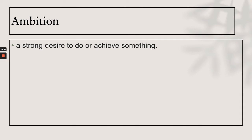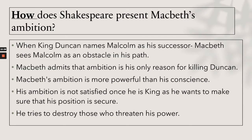Ambition means a strong desire to do or achieve something. Shakespeare presents Macbeth's ambition in several ways: when King Duncan names Malcolm as his successor, Macbeth sees Malcolm as an obstacle. Macbeth admits ambition is his only reason for killing Duncan. His ambition is more powerful than his conscience and is not satisfied once he is king — he wants his position to be secure and tries to destroy those who threaten his power.